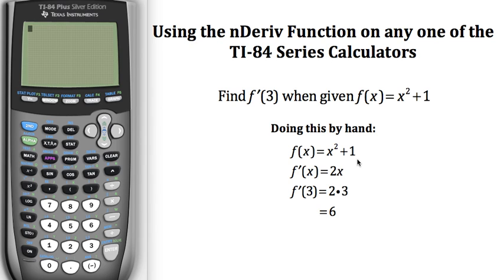Doing this by hand, I would take the function x² + 1, find the derivative to get 2x, and then finding the derivative at 3, I would plug 3 in and get 6. So using this function on the calculator, it should return a value of 6.